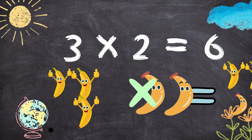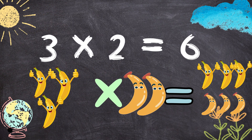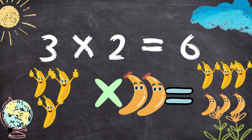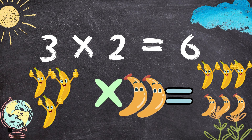Three times two equals to six. Three bananas times two bananas equals to six bananas.